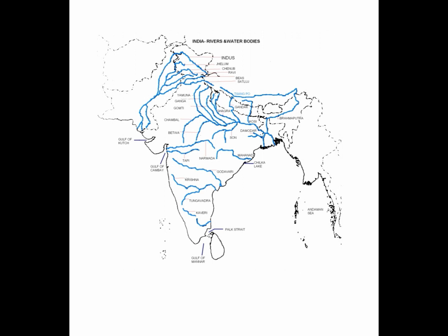Moving on towards the western region, there is river Indus, which has a lot of tributaries. When discussing tributaries we go from north to south. When asked to mark river Indus, you mark the topmost line, which also appears to be very long — that topmost line is river Indus.